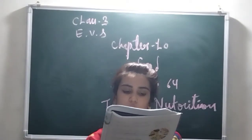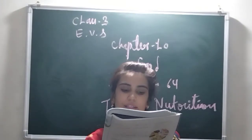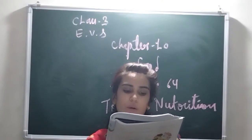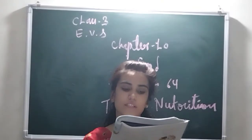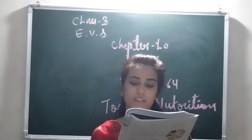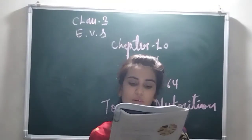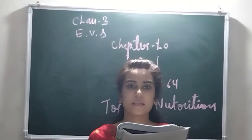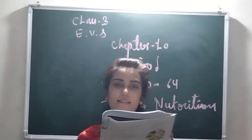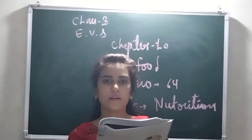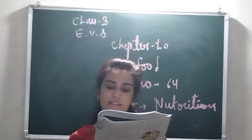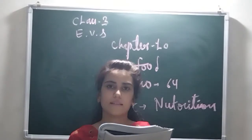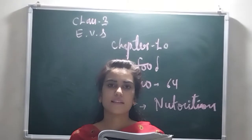On pages 64 and 65 there is a table about different types of nutrients. First: Carbohydrates. Sources of carbohydrates — we can get carbohydrates from rice, wheat, potato, and bread. The function of carbohydrates in our body is to give us energy.